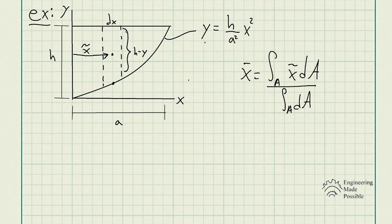So we have the height of this rectangle, which is h take away y, and we have the width of this being dx. Now this x-bar is equivalent to the x, so it will be the centroid of this arbitrarily small area that we just chose.